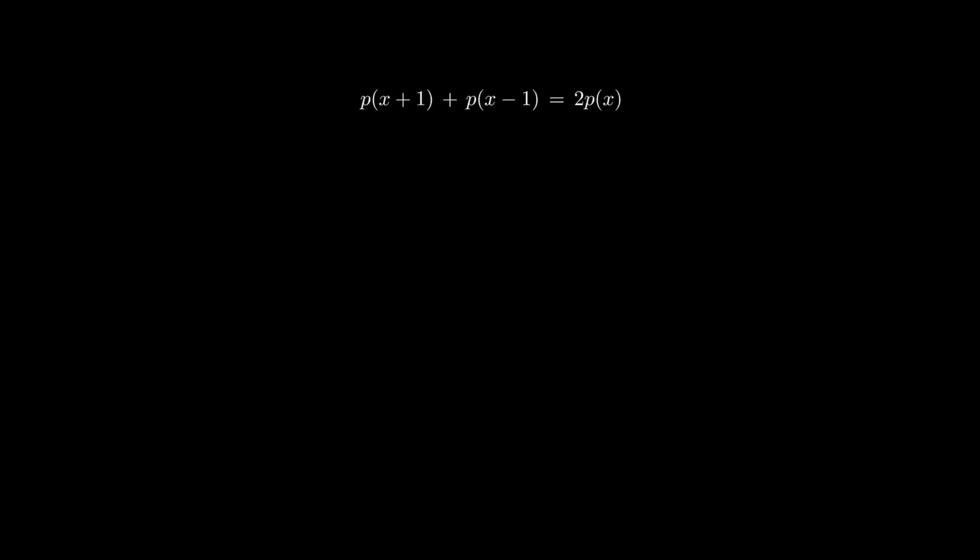Now we arrange this equation into p(x+1) - p(x) equals p(x) - p(x-1). If we let r(x) to be equal to p(x) - p(x-1), then we have r(x+1) to be equal to r(x).